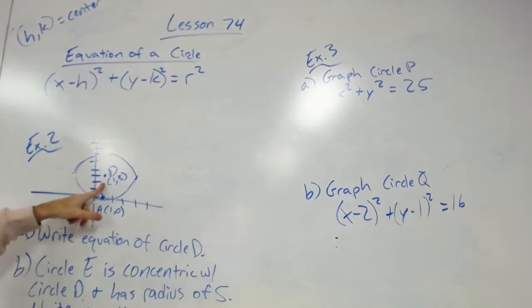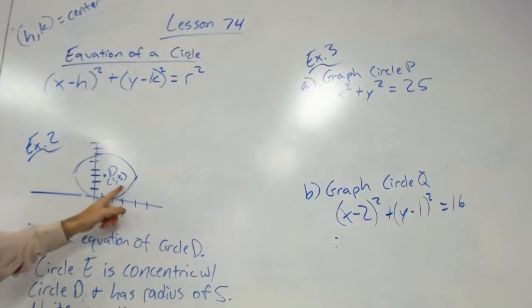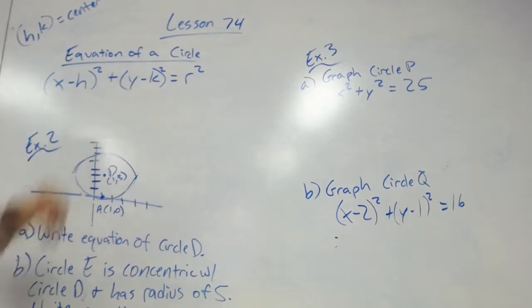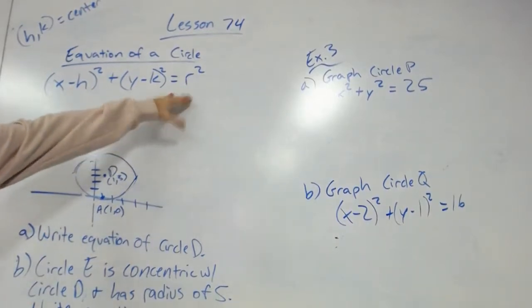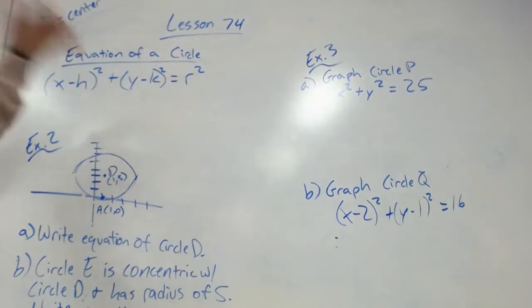Let's fast forward to example two. We have circle D and it gives (1, 3). That would be h and k, your center (1, 3) for your equation there. Then r would be your radius.